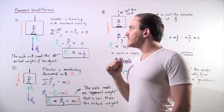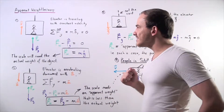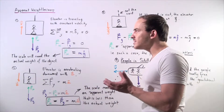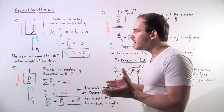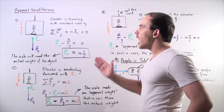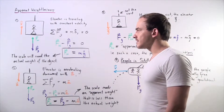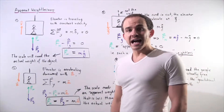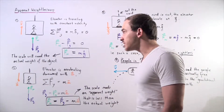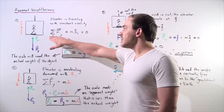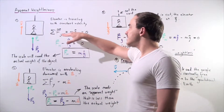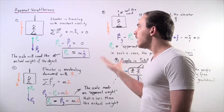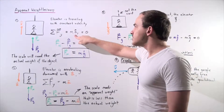Let's suppose that we have the following system. We have an elevator, and inside the elevator, we have a person standing on a scale. The elevator is traveling upward with constant velocity. So if we sum up all the forces acting on our object — the person — along the y-axis, we see that our sum is equal to zero because we have constant velocity and our object is not accelerating.